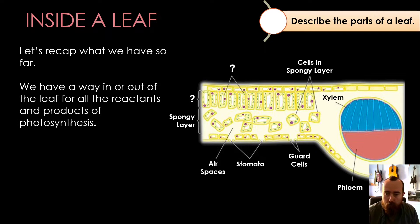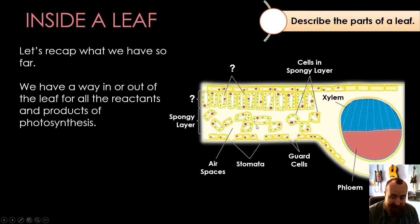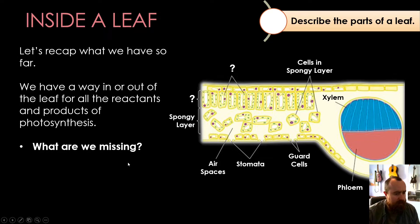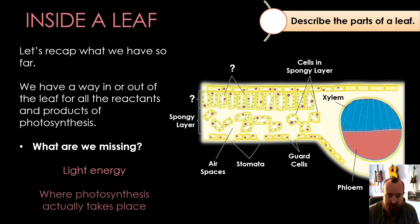Quick recap: we've got a way in and out of the leaf for all the reactions and products of photosynthesis. Carbon dioxide enters via the stomata into the air spaces. Water is delivered via the xylem. Oxygen gas leaves via the air spaces and the stomata. Glucose leaves the leaf via the phloem. We've got our spongy layer — but the thing we're missing so far is that we haven't yet talked about light energy and where the photosynthesis is actually taking place.